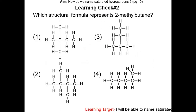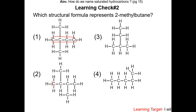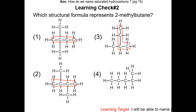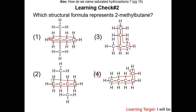Learning check number 2: which structural formula represents 2-methylbutane? The first step is to find the parent chain that is 4 carbons long. Choice 1 is 4 carbons long, choice 2 is 4 carbons long, choice 3 is 4 carbons long, and choice 4 is 5 carbons long — so choice 4 is wrong. Single bonds can rotate, so be careful; molecules are not always drawn in an obvious way. Based on the chemical name, there is only one substituent — the methyl group. Choices 1 and 2 have two methyl groups. Choice 3 has one methyl group on the second carbon. So the best answer is choice 3.